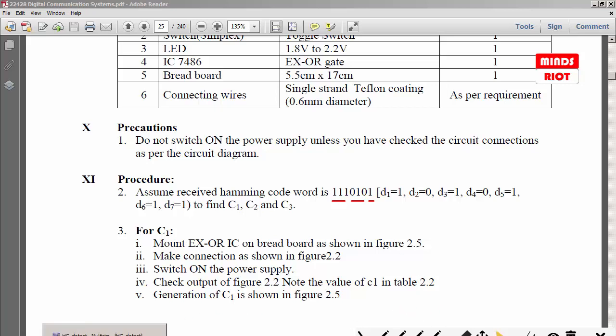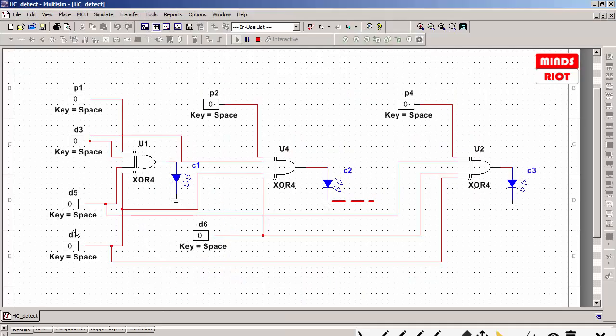This is your D7, we have to make it 1. D6 as 1, D5 as 1, D4 as 0 which is the parity bit P4 as 0, then D3 as 1, P2 as 0, and P1 as 1.